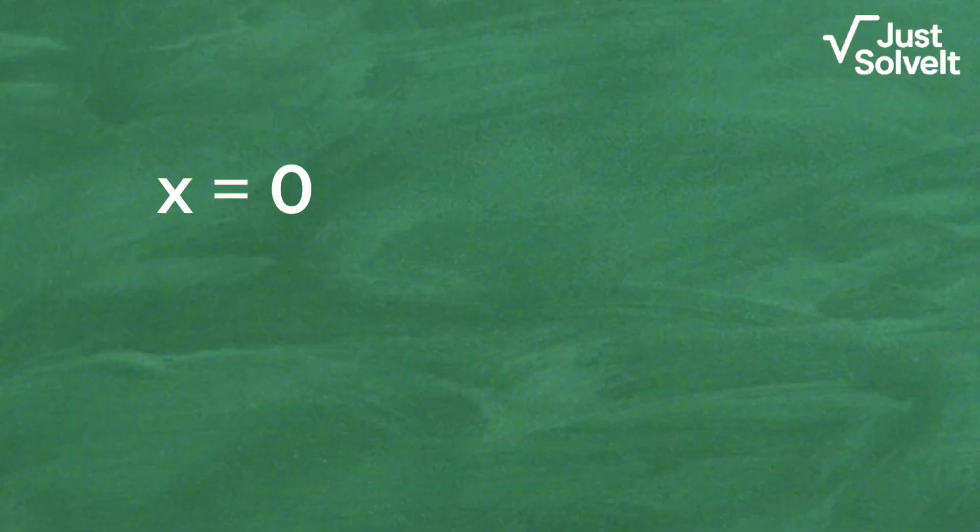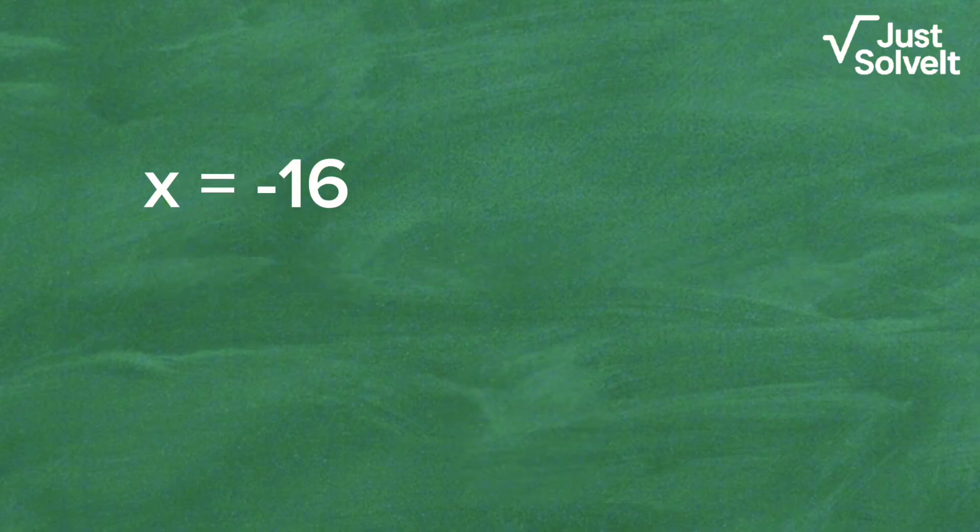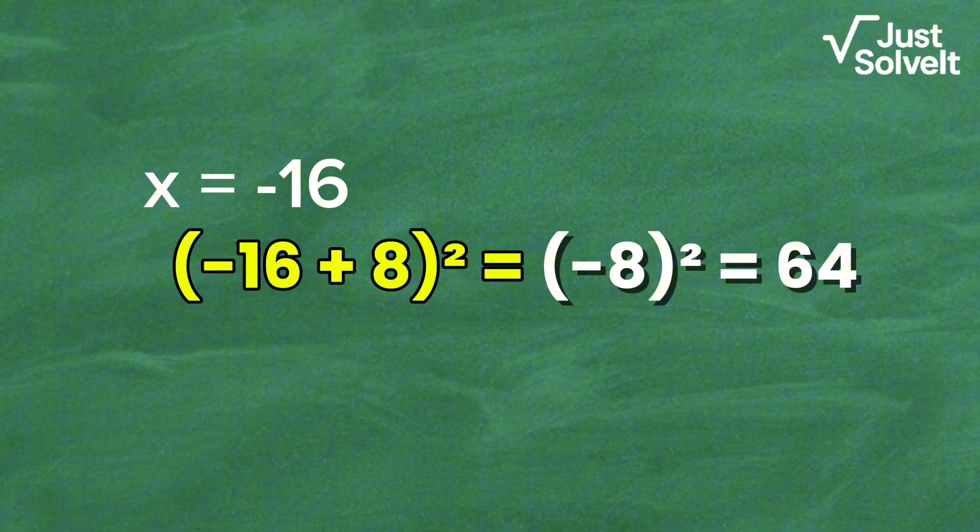Let's verify both values. x equals 0: (0 + 8) squared equals 64. 8 squared equals 64. Correct! x equals negative 16: (negative 16 + 8) squared equals (negative 8) squared equals 64. Also correct! Both values satisfy the original equation.